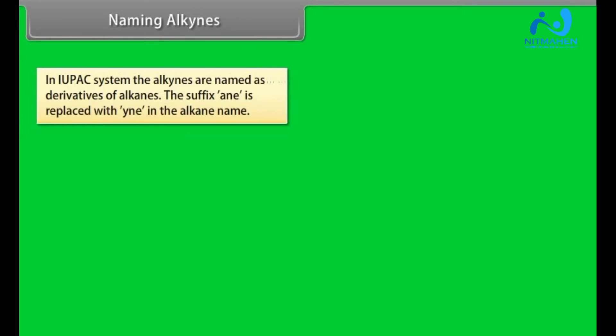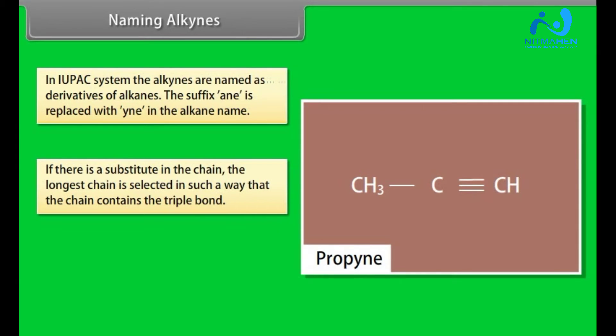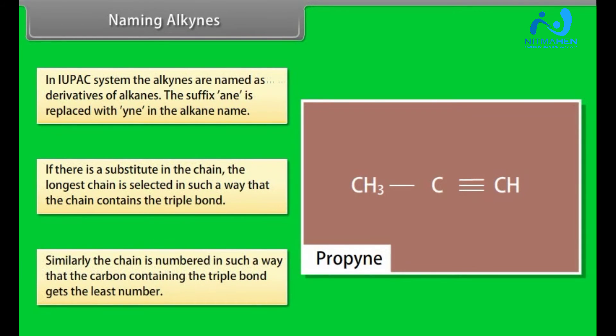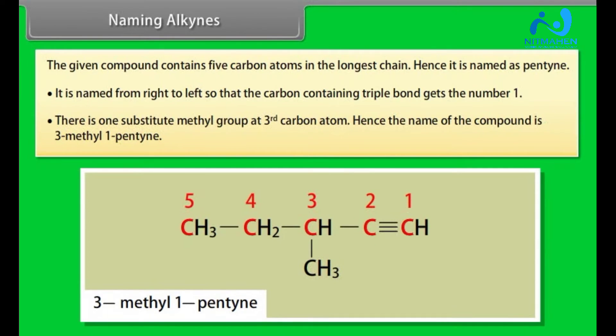Naming Alkynes. In IUPAC system, the alkynes are named as derivatives of alkanes. The suffix -ane is replaced with -yne in the alkane name. For example, the given compound has three carbon atoms and hence the root name is propane. If the suffix -ane is replaced with -yne, we will get the IUPAC name of the compound as propyne. If there is a substituent in the chain, the longest chain is selected in such a way that the chain contains the triple bond. Similarly, the chain is numbered in such a way that the carbon containing the triple bond gets the least number. For example, the given compound contains five carbon atoms in the longest chain. Hence, it is named as pentyne. It is named from the right to left so that the carbon containing triple bond gets the number one. There is one substituent methyl group at third carbon atom. Hence, the name of the compound is 3-methyl-1-pentyne.